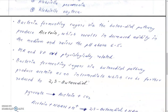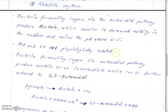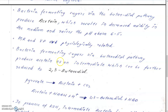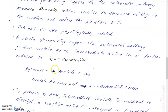Bacteria fermenting sugars via the butanediol pathway — which we discussed in the MR test — produce acetoin (acetylmethylcarbinol), resulting in decreased acidity, meaning the end products are neutral and pH rises above 6.5. MR and VP tests are physiologically related as they use the same broth and detect chemical components of the same nature. Bacteria fermenting via the butanediol pathway produce acetoin as an intermediate, which can be further reduced to 2,3-butanediol. Pyruvate is converted into acetoin and carbon dioxide, and acetoin reacts with NADH.